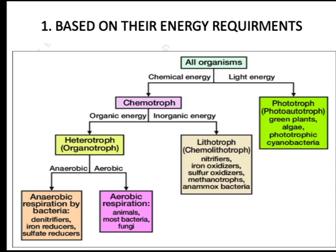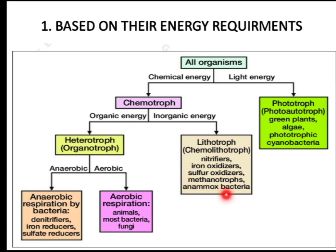If energy is from organic compounds, it is known as organotrophs or heterotrophs. If energy production is from inorganic compounds, it is known as lithotrophs or chemolithotrophs. Examples of lithotrophs are nitrifiers, iron oxidizers, sulfur oxidizers, methanotrophs, and anammox bacteria.